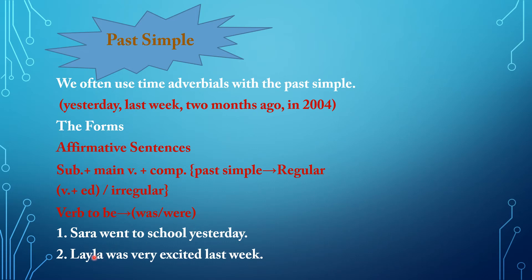Number two: Layla was very excited last week. Layla is the subject; was is verb to be, and it is the main verb at the same time because it is the only verb in this sentence. Very excited last week is the complement of the sentence.